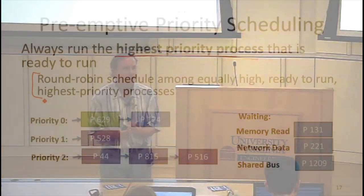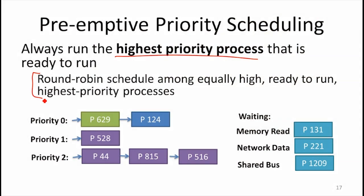How do we like priority preemptive scheduling? How well does this do on our criteria? Our criteria were using resources well and fairness. In terms of keeping the resource doing something useful all the time and not wasting resources unnecessarily, does it do worse or better than first-come, first-served scheduling?